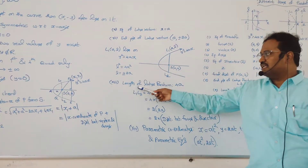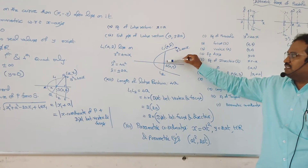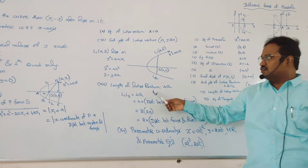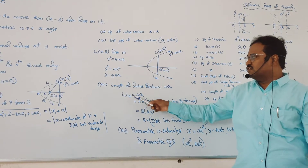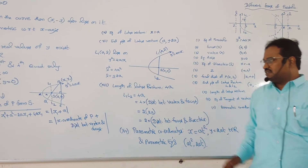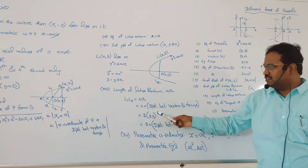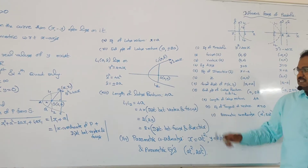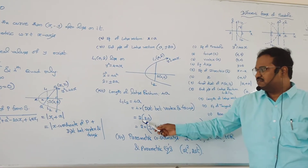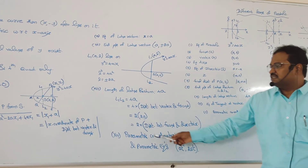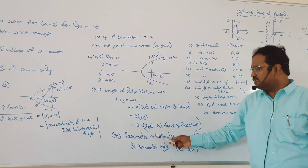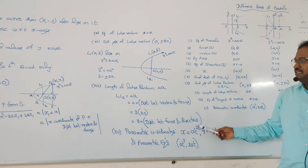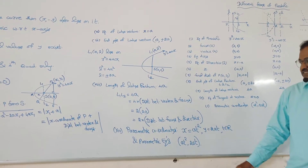The length of the latus rectum: the above length and below length are the same, so the total length is 4A. This can also be written as 4 times the distance between the vertex and focus, or 2 times 2A, which equals 2 times the distance between the focus and the directrix.